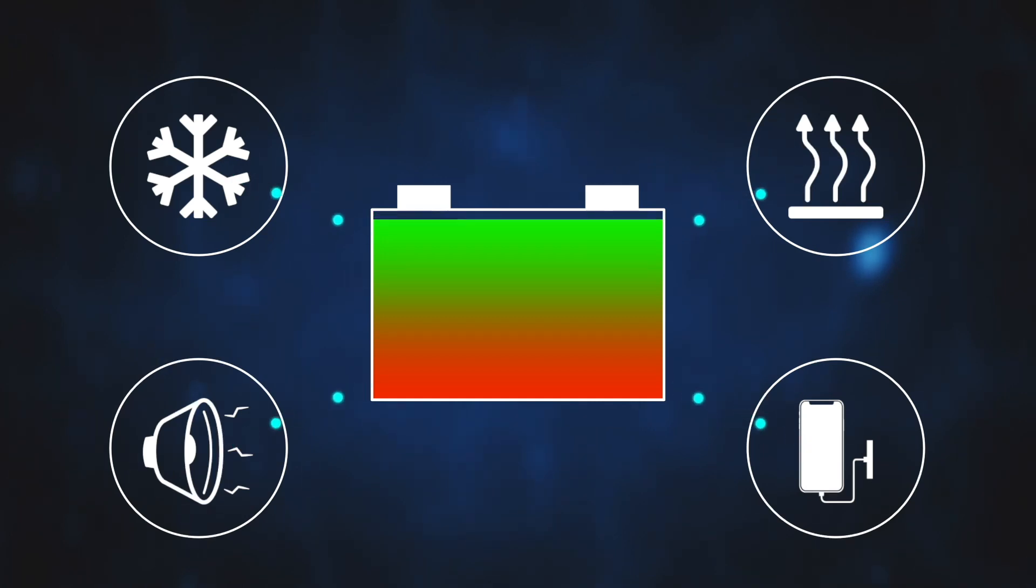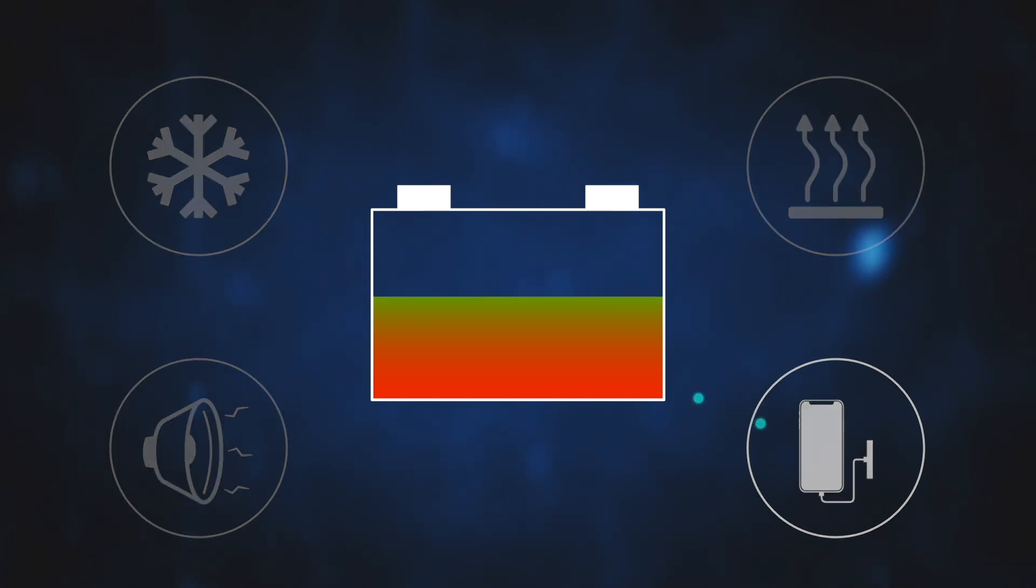Every consumer from the in-cab refrigerator to charging a mobile telephone or tablet will discharge the battery. Ensure that all possible electrical consumers are switched off if not required, especially during long stops.